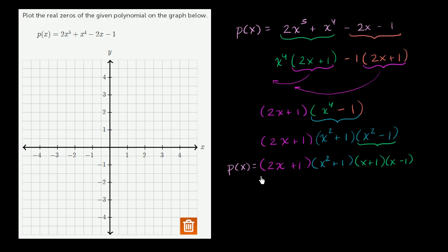Remember, the whole reason why I wanted to factor it is I wanted to figure out when does this thing equal 0. If p of x can be expressed as the product of these expressions, it's going to be 0 whenever at least one of these expressions is equal to 0. So when does 2x plus 1 equal 0? Subtract 1 from both sides, you get 2x equals negative 1. Divide both sides by 2, you get x is equal to negative 1/2. So p of negative 1/2 is 0. So this is a point on the graph and it is one of the real zeros.